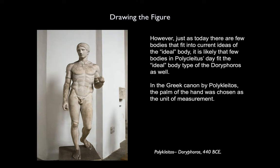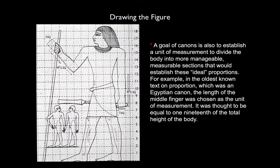In the Greek canon by Polykleitos, the palm of the hand was chosen as the unit of measurement. A goal of canons is also to establish a unit of measurement to divide the body into more manageable, measurable sections that would establish these ideal proportions. For example, in the oldest known text on proportion, which was an Egyptian canon, the length of the middle finger was chosen as the unit of measurement, and it was thought to be equal to 1/19th of the total height of the body.